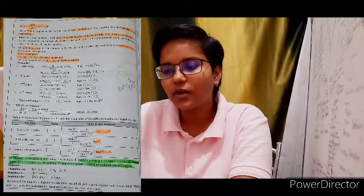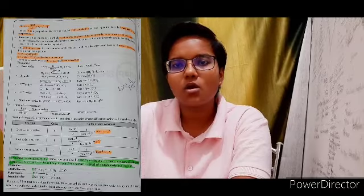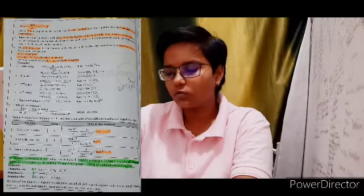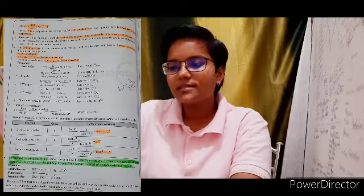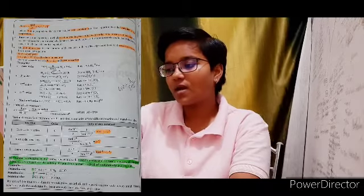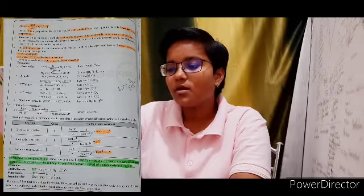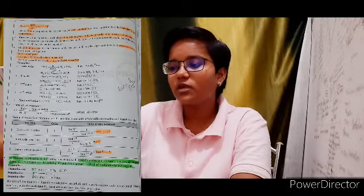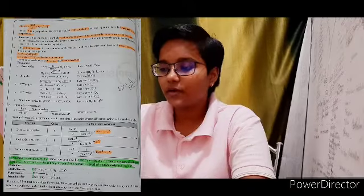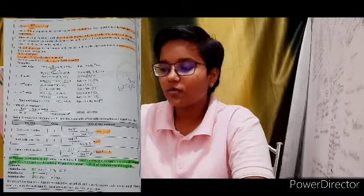Rate constant K = rate / ([A]^x[B]^y) = (concentration/time) × (1/concentration^n), where n is the order of reaction. For zero order, the unit of rate constant is mol L⁻¹ s⁻¹. For first order, the unit of rate constant is s⁻¹. For second order, the unit of rate constant is mol⁻¹ L s⁻¹.